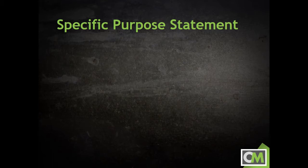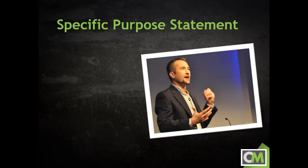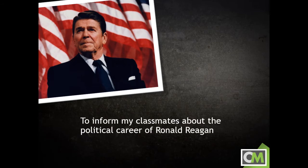Once you have identified the general purpose for your speech, you can zoom in a little more through the creation of a specific purpose statement. If we go back to the idea of planning a vacation, the specific purpose would be the equivalent of identifying a more specific destination, like St. Louis or Chicago. In public speaking, a specific purpose statement starts with the general purpose and then provides further detail about the goals of the speech. The basic formula for the specific purpose statement is to restate the general purpose, identify the specific audience for the speech, and then detail what it is you want the audience to learn, do, reconsider, or agree with at the conclusion of the speech. One example of a specific purpose statement would be: "To inform my classmates about the political career of Ronald Reagan." "To inform" states the general purpose, "my classmates" identifies the audience in question, and "about the political career of Ronald Reagan" gives an appropriate amount of detail on the subject to be discussed.